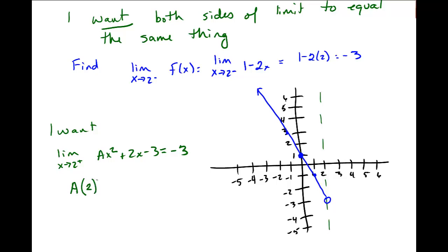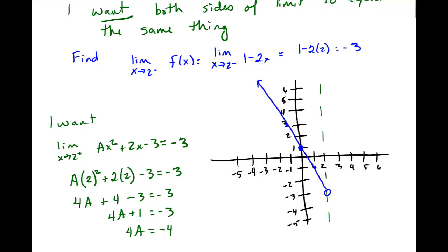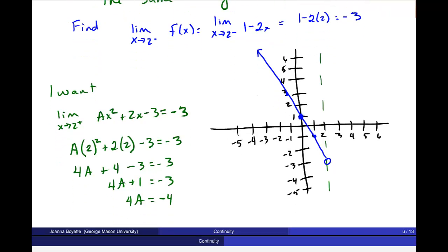And I'll solve for a. So this is 4a plus 4 minus 3 equals negative 3. 4a plus 1 equals negative 3. 4a is equal to negative 4. And I think we'll get a as negative 1. So now I have this function on the right side of this to be negative x squared plus 2x minus 3. That's my second piece of this piecewise function.